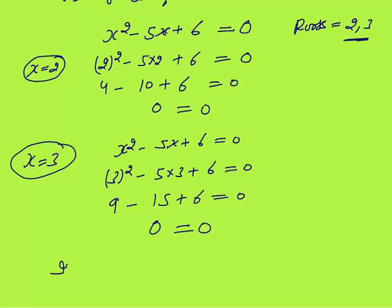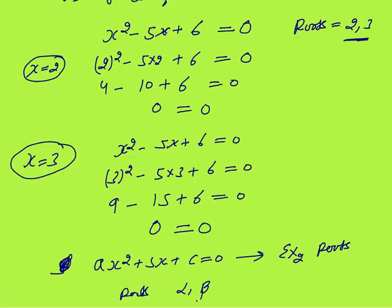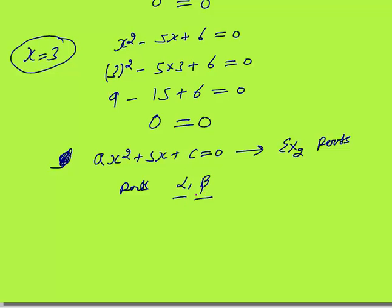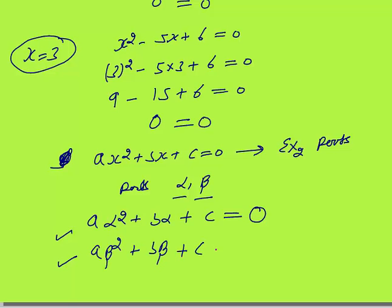To generalize: for ax² + bx + c = 0, every quadratic equation always has exactly two roots. Let the roots be alpha and beta. Root means that if you put x = alpha or x = beta, the equation is satisfied — meaning a·α² + b·α + c = 0 and a·β² + b·β + c = 0. Every quadratic equation has exactly two roots.